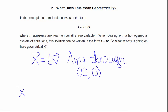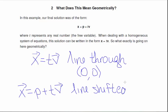If I want to think of the other one, x equals p plus tv, this is still a line, but it's shifted up by the vector p.